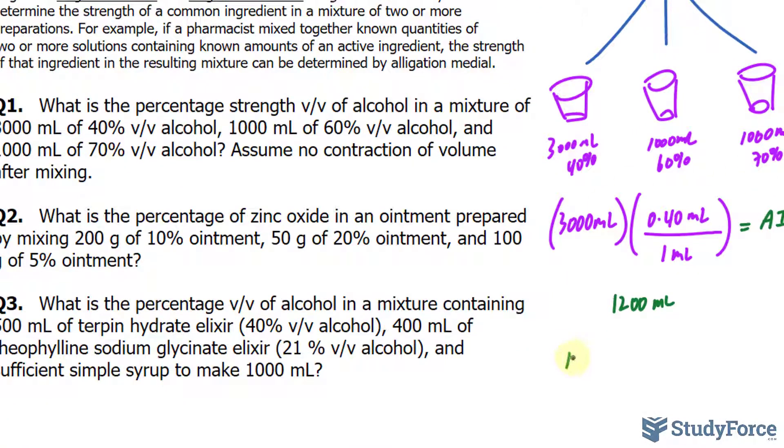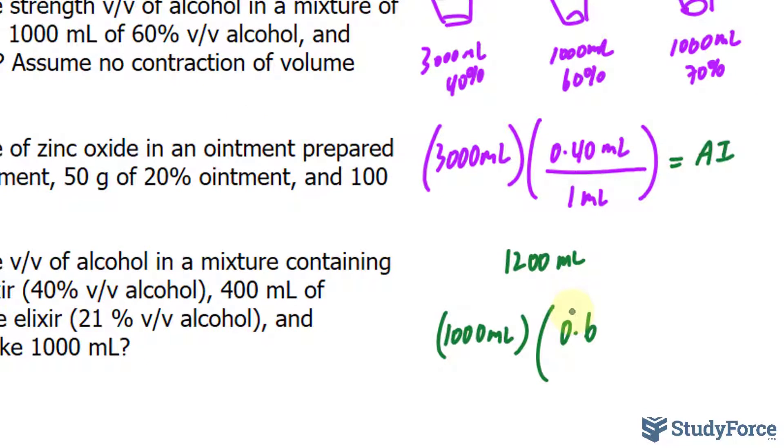So again, we have 1000 milliliters of total solution found in here multiplied by its concentration of 0.6. Now that's a decimal value, but we can write it down as a fraction by making it over 1. It's 0.6 milliliters of alcohol per 1 milliliter of solution. Multiplying this out, we get 600 milliliters of alcohol.